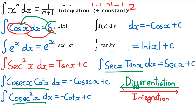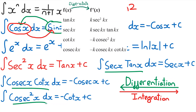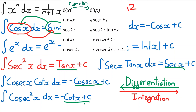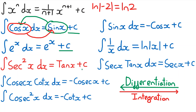If you look in the differentiation section of the formula booklet, they give you the differentials of tan, sec, cosec and cot. So these integrals are technically given to you in the differentiation section — you just need to reverse the direction to get the integrals. And remember, for all integration, you need the plus c on the end, as we discussed in Year 1.